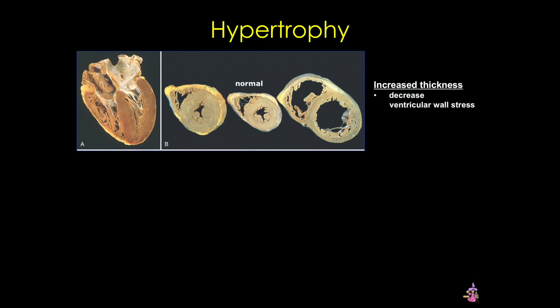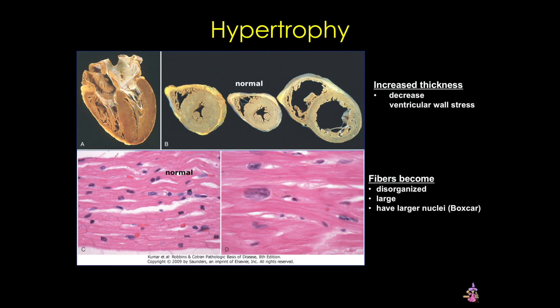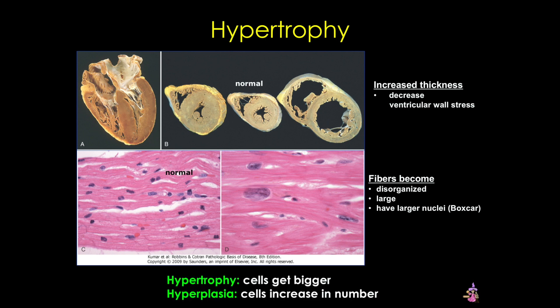We'll start with myocardial changes, specifically cardiac hypertrophy. Recall that hypertrophy can be a normal response to increased stress on the heart, whether from increased pressure or increased volume. The heart responds by thickening its walls or enlarging the chamber. If we look at micrographs of hypertrophied hearts, the image on the right has larger and thicker fibers that are more disorganized and have larger nuclei. Remember that these heart muscle fibers aren't increasing in number — they are getting bigger.